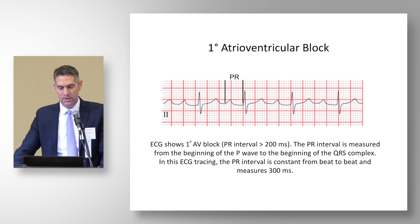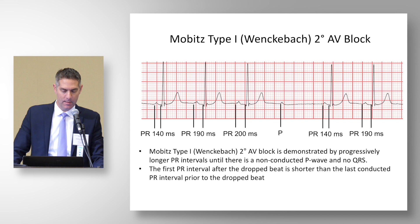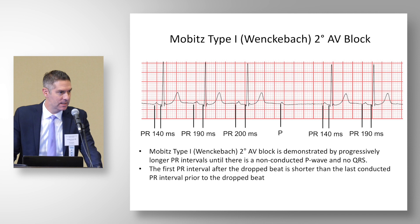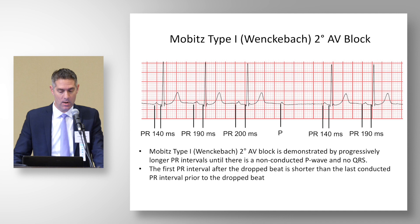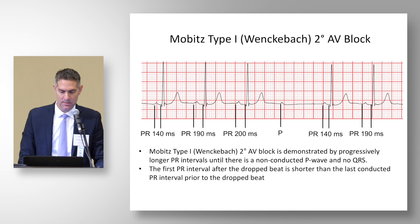This ECG shows Mobitz type 1 or Wenckebach second degree AV block, where there are progressively longer PR intervals until there is a non-conducted P wave and no QRS complex. The initial PR is 140 ms, then 190 ms, then 200 ms, then a dropped beat. Importantly, the PR interval in the next QRS complex is shorter than the last PR interval before the dropped beat — consistent with Mobitz type 1. If you exercise this individual, they go back into sinus rhythm. This is a normal finding on a resting ECG and does not require more investigation.